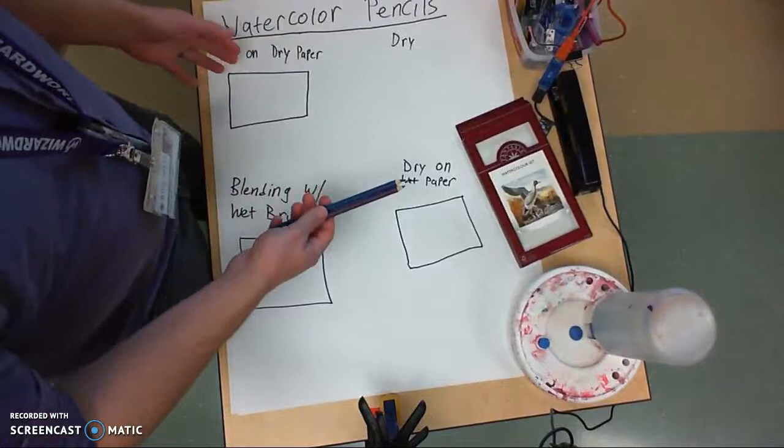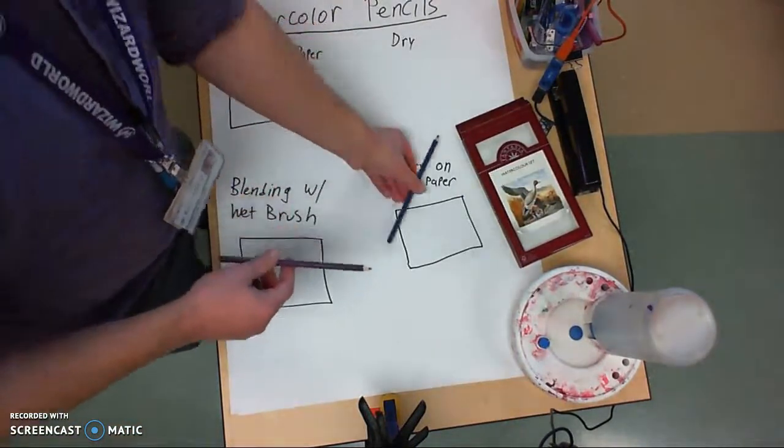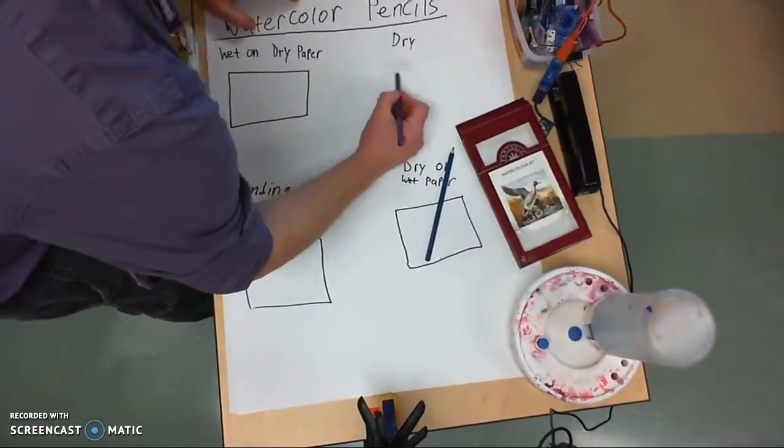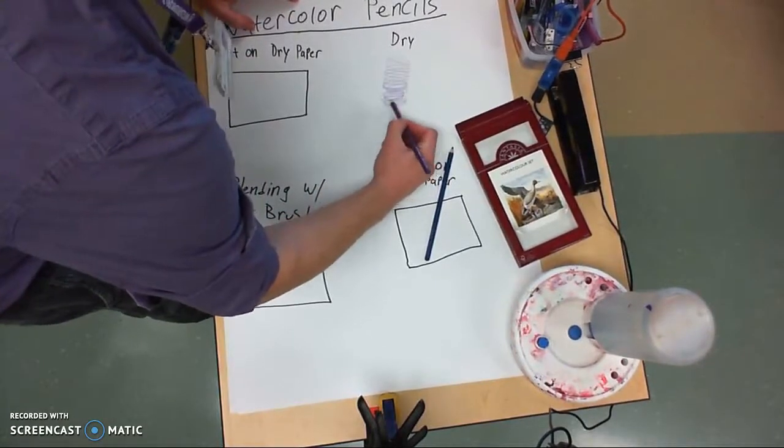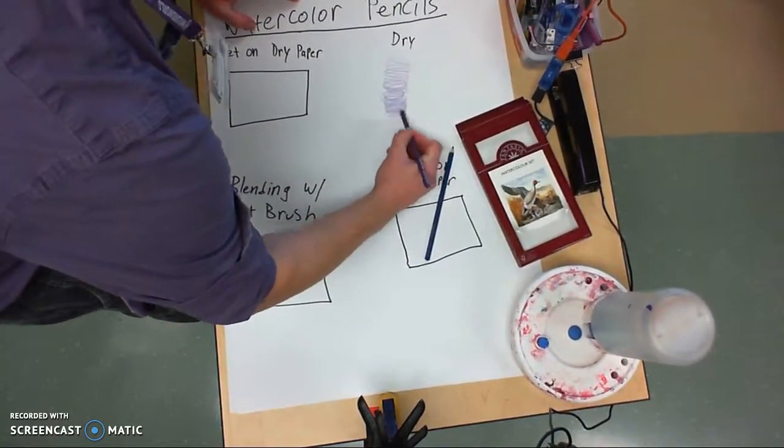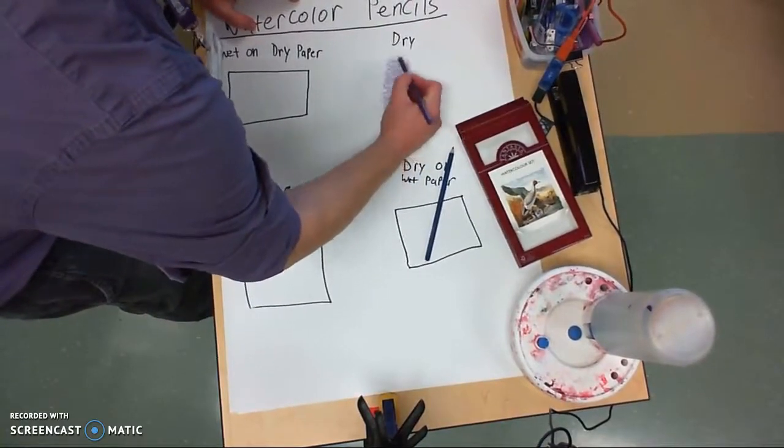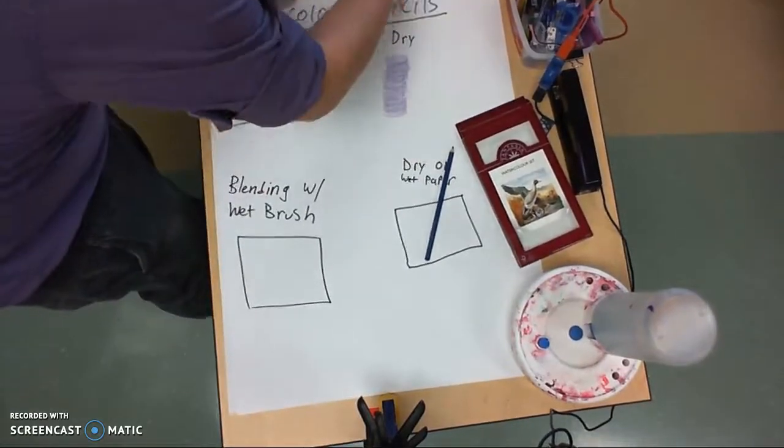There's a couple basic techniques and different ways that you can use color pencils. You're probably familiar with using color pencils in a traditional way to color in an area. So here I'm using a purple watercolor pencil and I'm just going to show you what this looks like with the dry on dry.